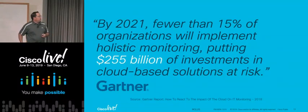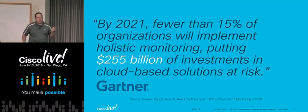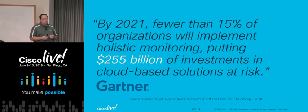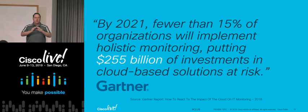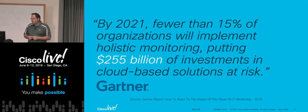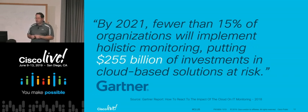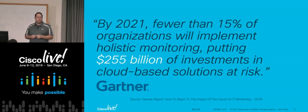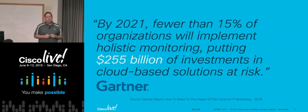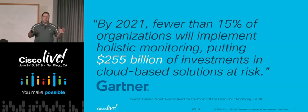This is a quote from Gartner — I'll show you where to get this report at the end. They estimated that fewer than 15% of organizations are actually implementing holistic monitoring in the cloud, meaning a platform that provides broad visibility across all your applications and infrastructure so you can resolve problems quickly. They estimate this puts $255 billion of investments at risk for cloud-based solutions — a huge amount of money, really just because companies didn't implement monitoring in a way that lets them effectively see what's going on in their environment.